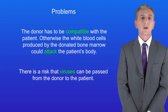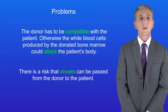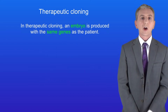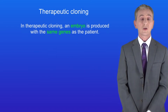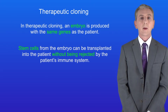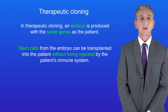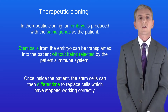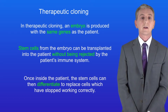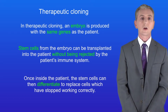Another way stem cells can be used in medicine is in therapeutic cloning. In therapeutic cloning, an embryo is produced with the same genes as the patient. This means stem cells from the embryo can be transplanted into the patient without being rejected by the patient's immune system. Once inside the patient, the stem cells can then differentiate to replace cells which have stopped working correctly.